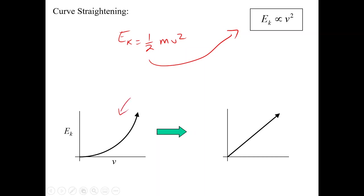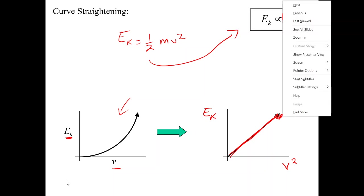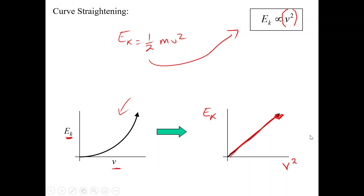If we were to graph kinetic energy versus speed, we'd recognize that EK equals one-half MV squared, and there's a squared relationship. The squared relationship would not produce a straight line graph. So rather than just graphing the manipulated and responding variable directly, we actually want to graph the proportionality itself. I'm going to graph V squared versus kinetic energy. Kinetic energy has a direct relationship to speed squared, and that will produce a nice straight line through the origin.